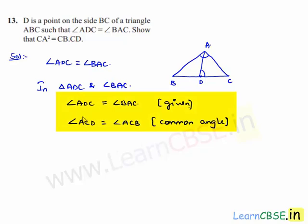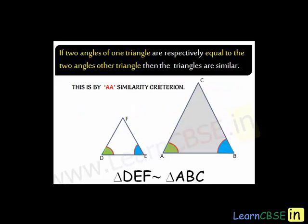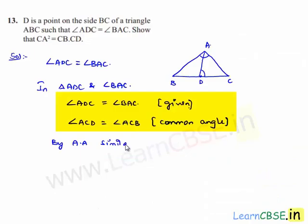Therefore, as two angles are correspondingly equal, we can say by AA similarity that triangle ADC is similar to triangle BAC.